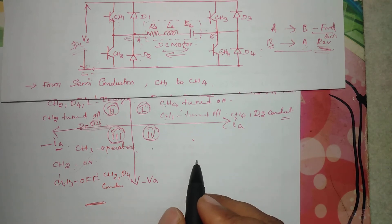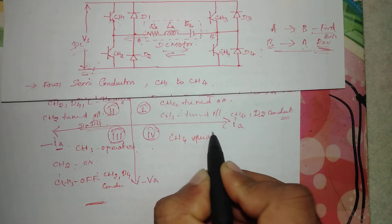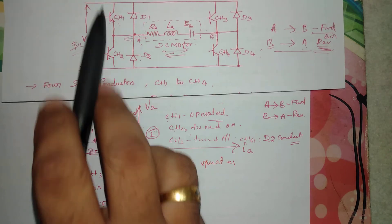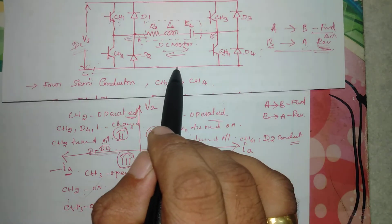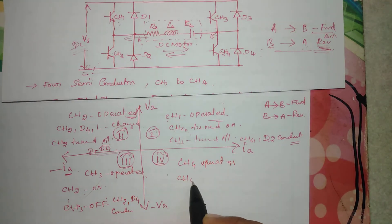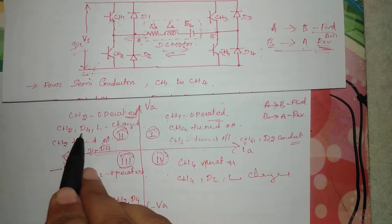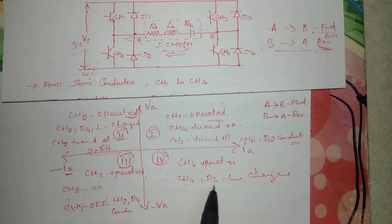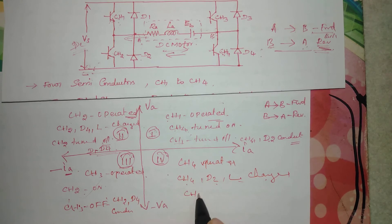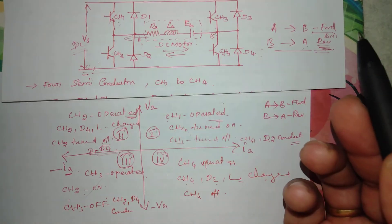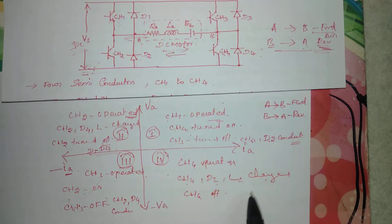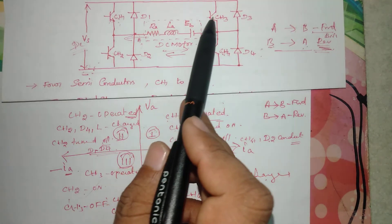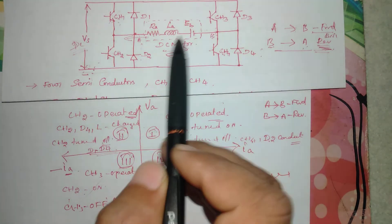For fourth quadrant (reverse braking): CH4 is operated. The current discharges via CH4 and D2 — similar to how CH2 and D4 discharged in forward braking. Then CH4 is turned off and D3 and D2 come into action, ensuring the plus and minus are not connected to the load, completing the discharge cycle for fourth quadrant operation.